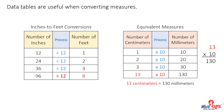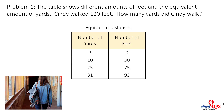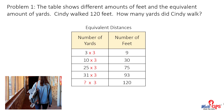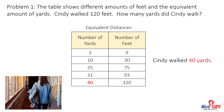Let's look at some problems. Problem 1: The table shows different amounts of feet and the equivalent amount of yards. Cindy walked 120 feet. How many yards did Cindy walk? Look at the table. What is the process? Multiply by 3. What number times 3 equals 120? 40 times 3 equals 120. Cindy walked 40 yards.